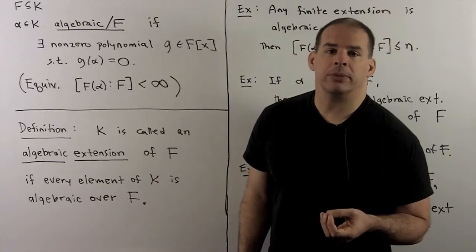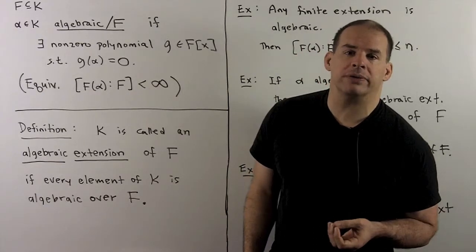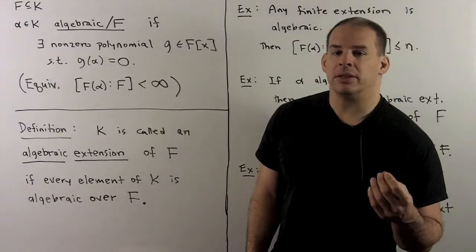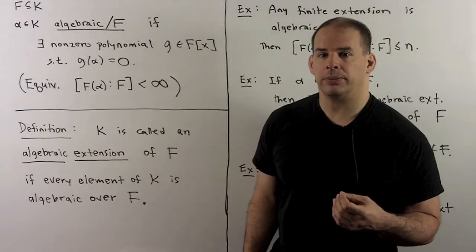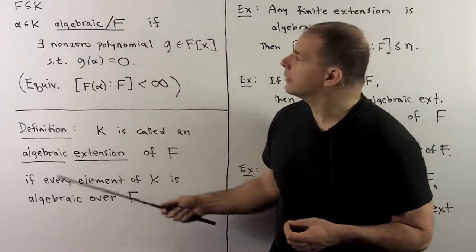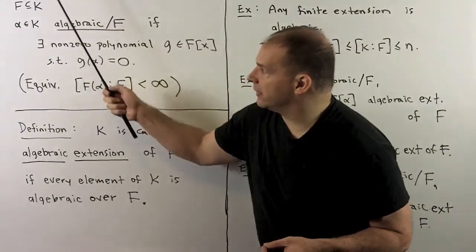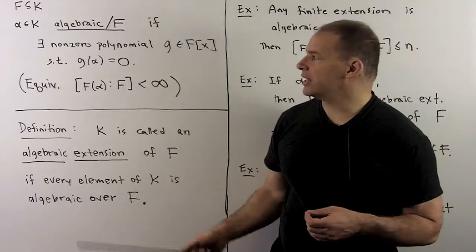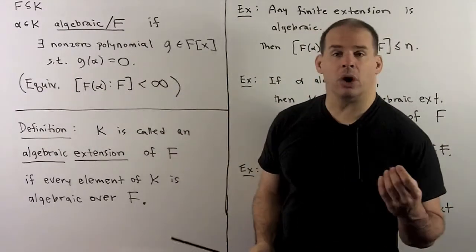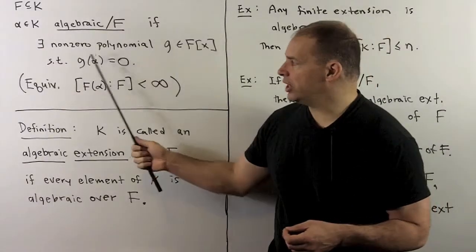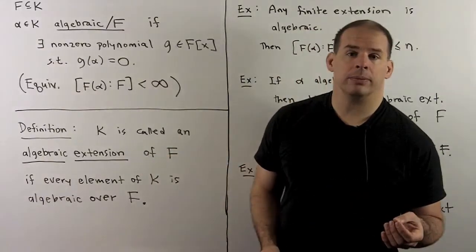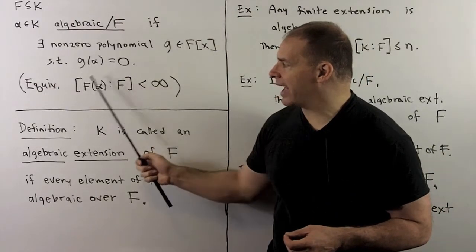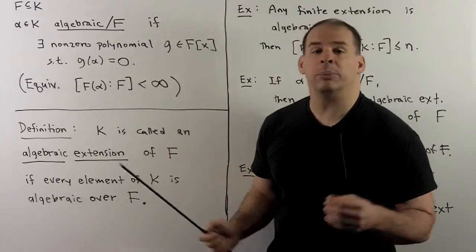Continuing with the property of algebraic, we move from algebraic elements over a field to algebraic extensions over a field. This will lead to the notion of algebraic closure. To begin, we start with f, a subfield of k, and we say that alpha in k is algebraic over f if there exists a non-zero polynomial g with coefficients in f such that g of alpha is zero. We've seen that this condition is equivalent to the degree of the subfield generated by f and alpha over f being finite.